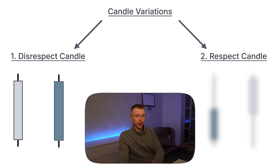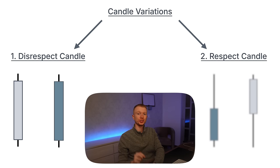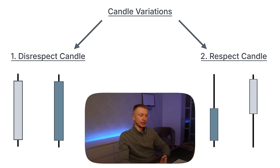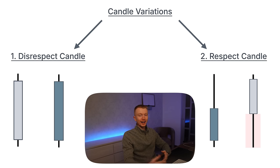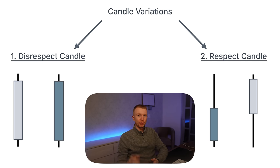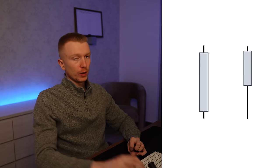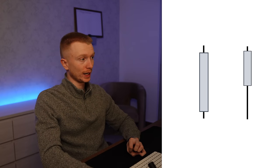That is the first candle variation. Now we need to go over the second candle variation: the respect candle. The respect candle variation is when we have one long wick — either a long wick at the bottom or at the top of the candle. Ideally, you want a smaller wick at the opposite side. Whatever the body of the candle does is not super relevant.